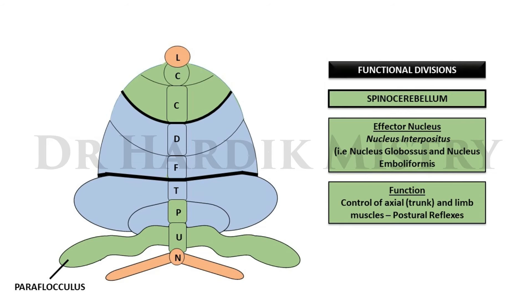The spinocerebellum includes the entire anterior lobe except lingula, plus pyramids, uvula, and paraflocculus of the posterior lobe. Its effector nucleus is the nucleus interpositus, which is the collection of nucleus globosus and nucleus emboliformis. Its function is the control of axial and limb muscles.